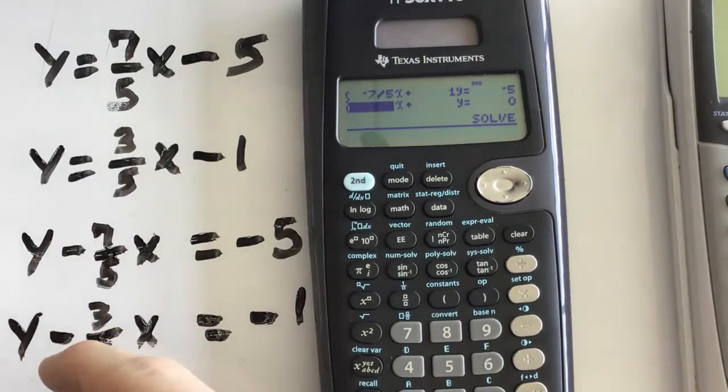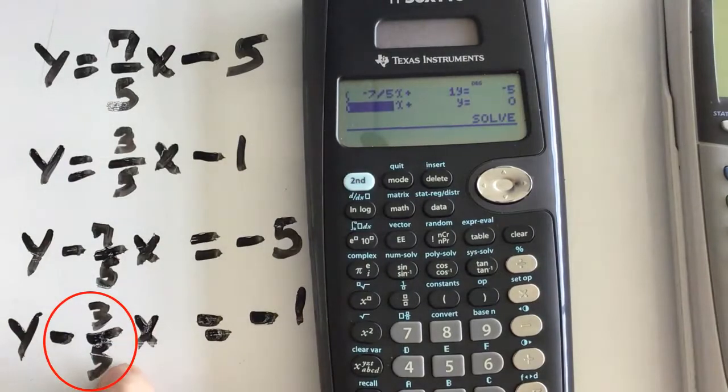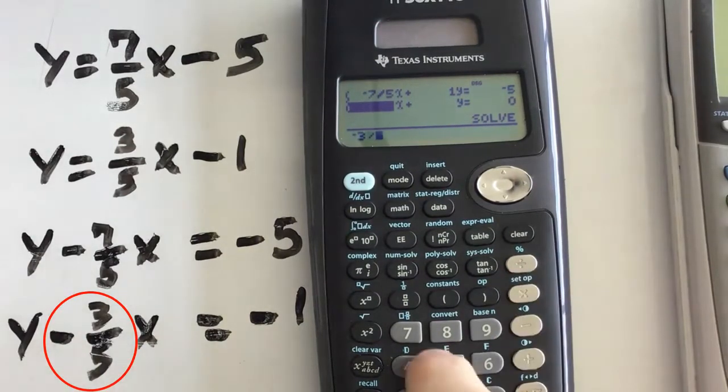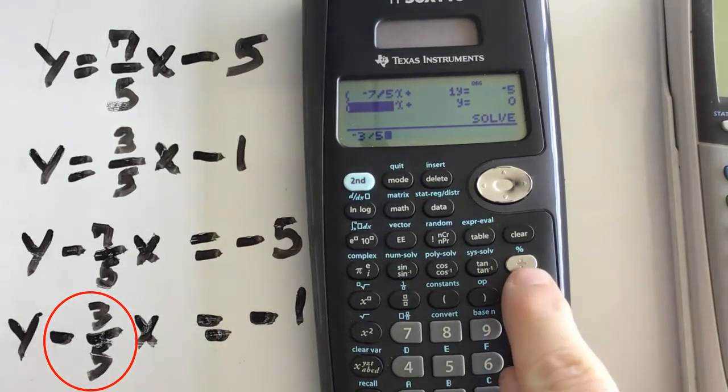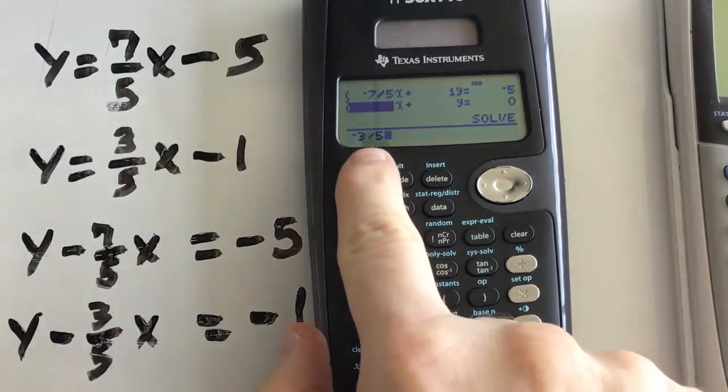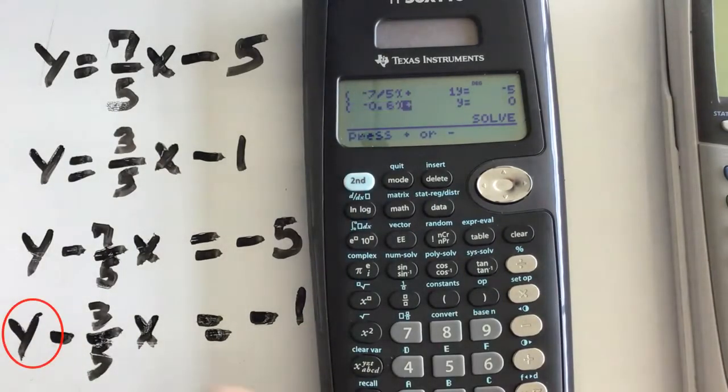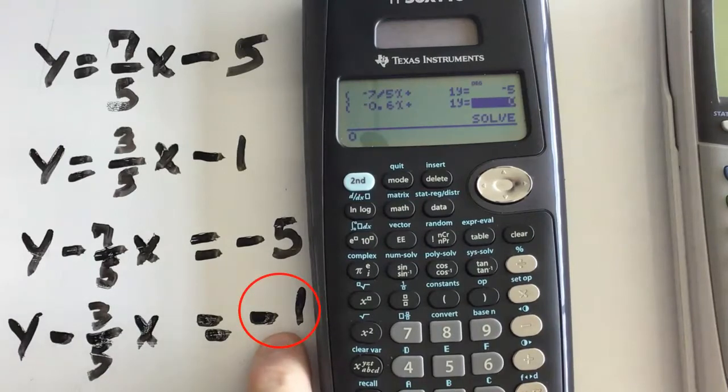Now I got to do the second equation. And again, in front of the X, negative means the same thing colloquially. So negative 3 fifths, negative 3 fifths. And you notice I can use the division sign or the fraction bar. Either way, I'll get that little fraction divisor line there. Again, positive Y. And then that invisible one that we can't see. And it equals negative 1.